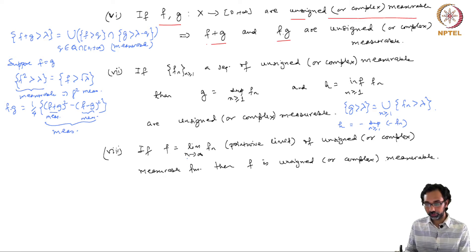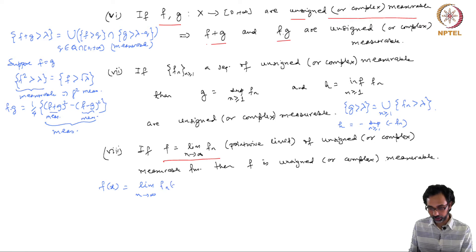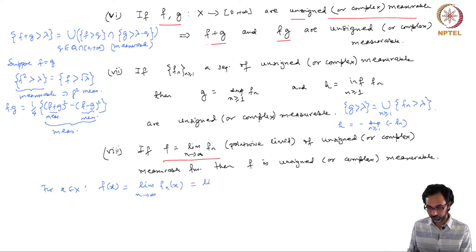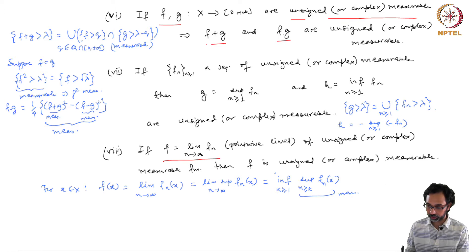For the pointwise limit: if each fₙ is unsigned measurable and f(x) = lim_{n→∞} fₙ(x), then f is unsigned measurable. This follows because the limit equals the lim sup when lim sup equals lim inf. The lim sup of fₙ(x) is inf_k sup_{n≥k} fₙ(x). The inner supremum is measurable, and the outer infimum of measurable functions is measurable, so f is measurable.